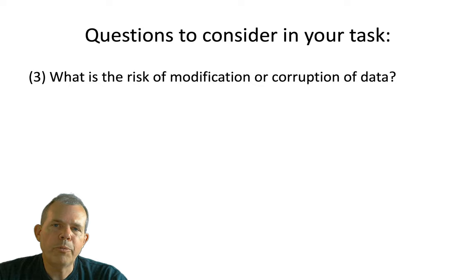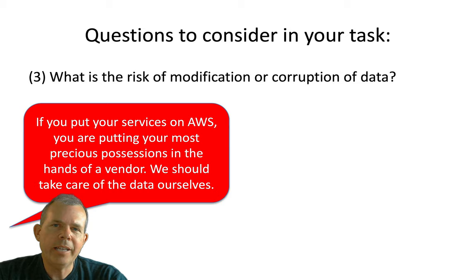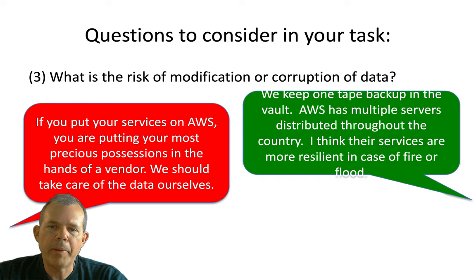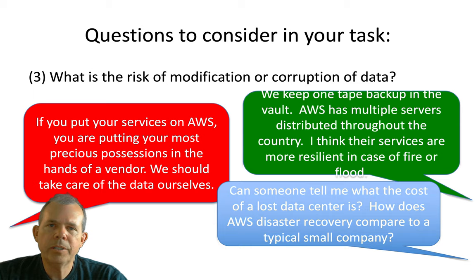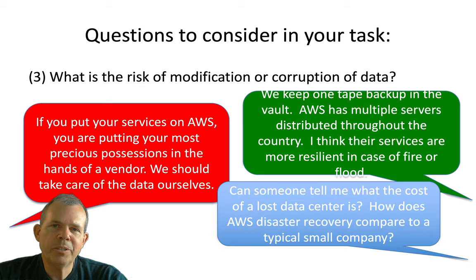What's the risk of data corruption? One argument: you're putting your most valuable assets in the hands of a vendor — shouldn't we take care of the data ourselves? The counter-argument: we keep one tape in the vault, but AWS has servers distributed throughout the country — maybe the whole world — with fault tolerance. They're not going to burn down or flood. Then the boss asks: what's the cost of a data center, and how much does it cost to fix and replace it? Do we pay more for Amazon and not have to worry about replacing a data center? Give me some numbers.